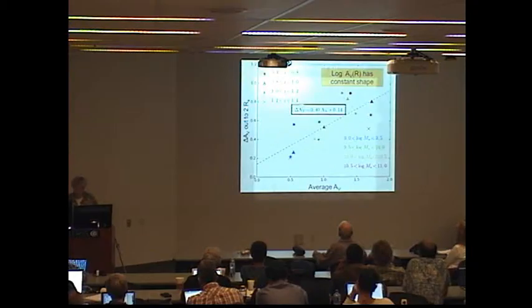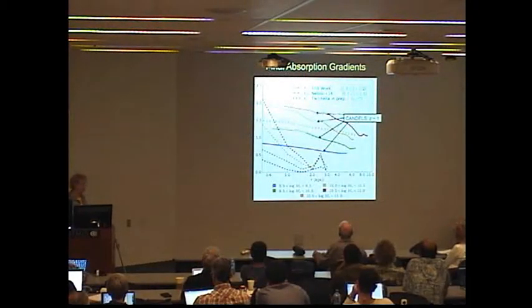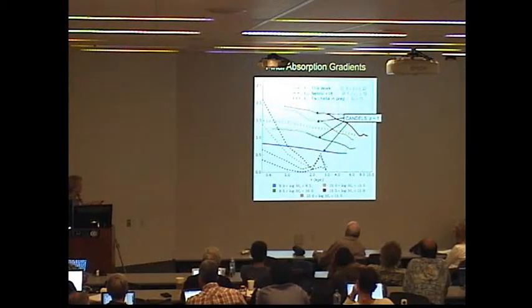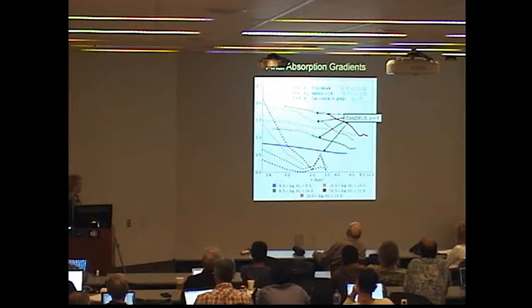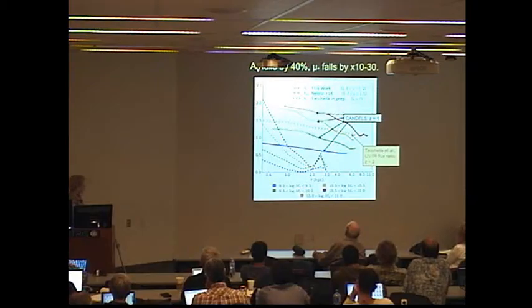Now let me show you the results from CANDELS. These are the final absorption gradients for galaxies of different masses at this redshift bin, Z of 1.0 to 1.2. Here's little galaxies, and here's big galaxies. That's what we get with CANDELS. And now on the same picture is Sandro's measurement from this morning. And he's at Z of 2, and we're around Z of 1. And they pretty much agree.